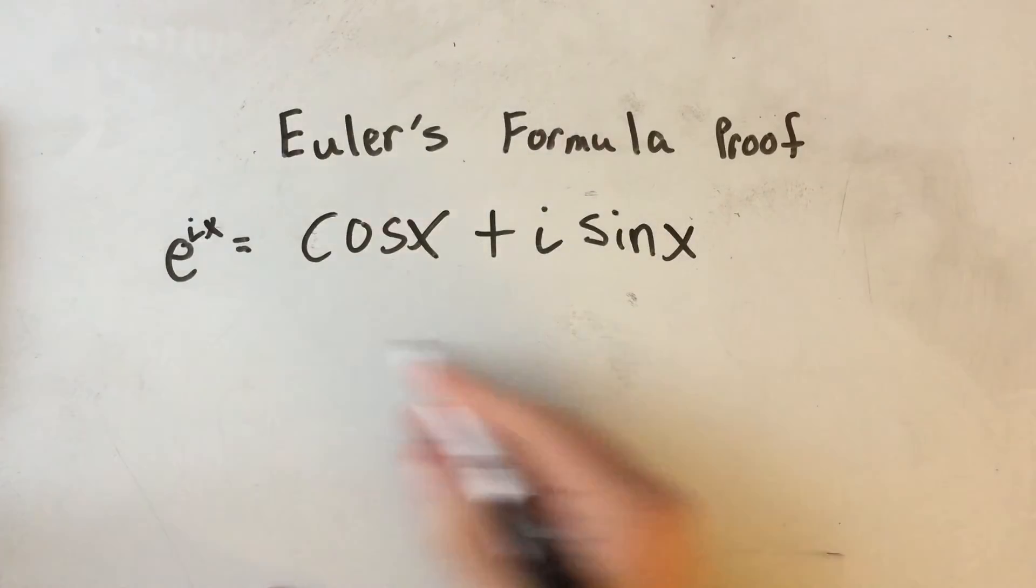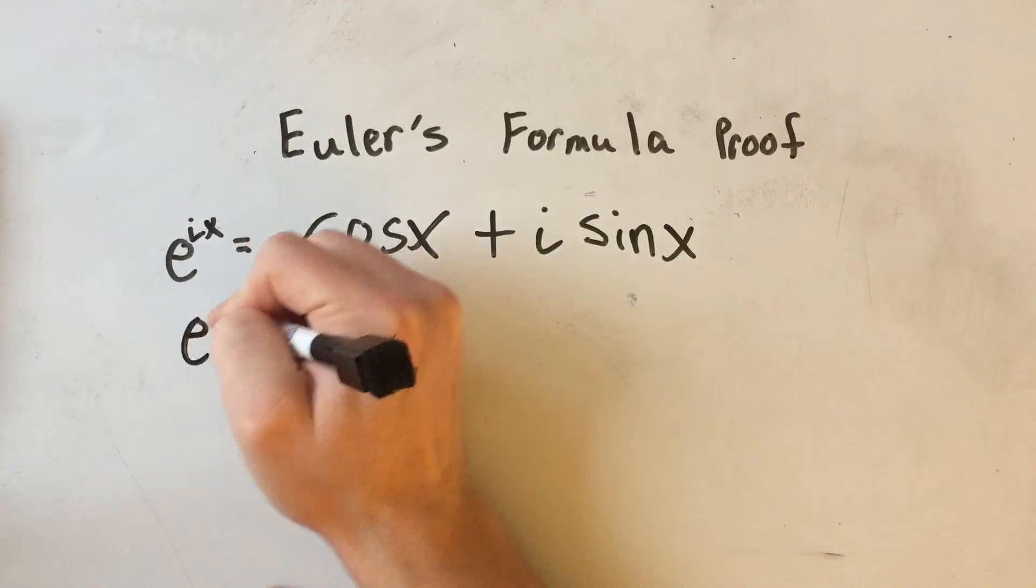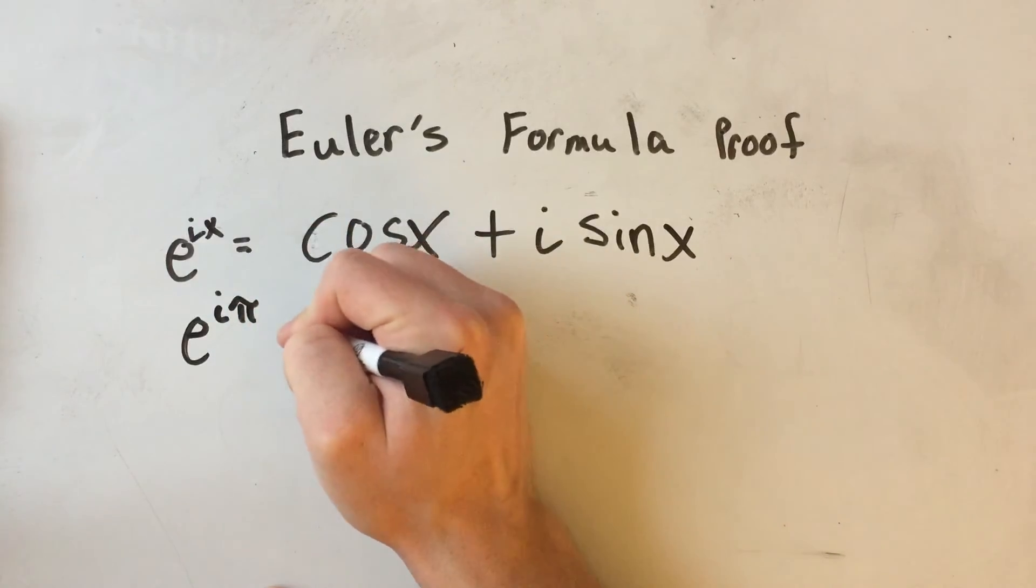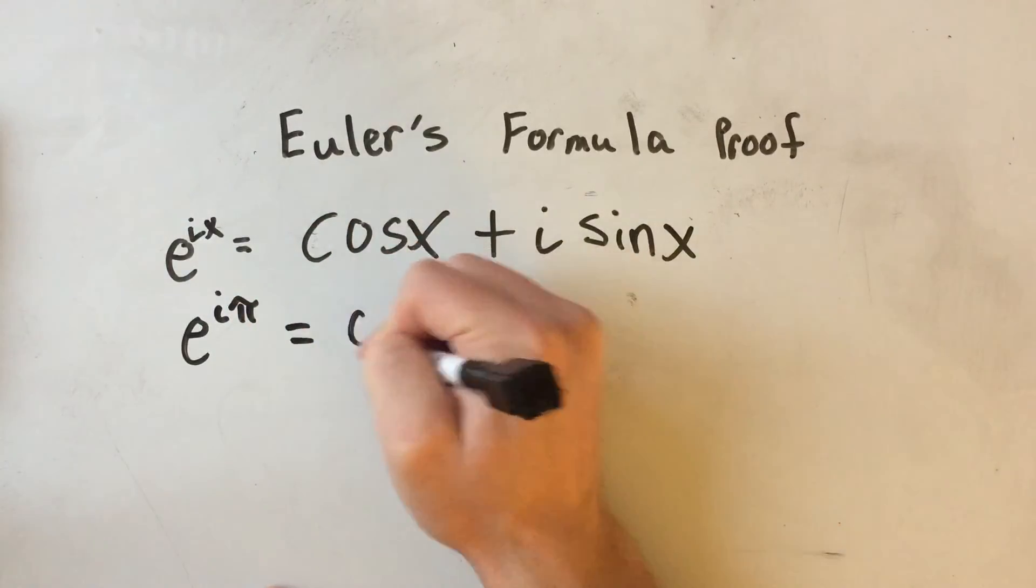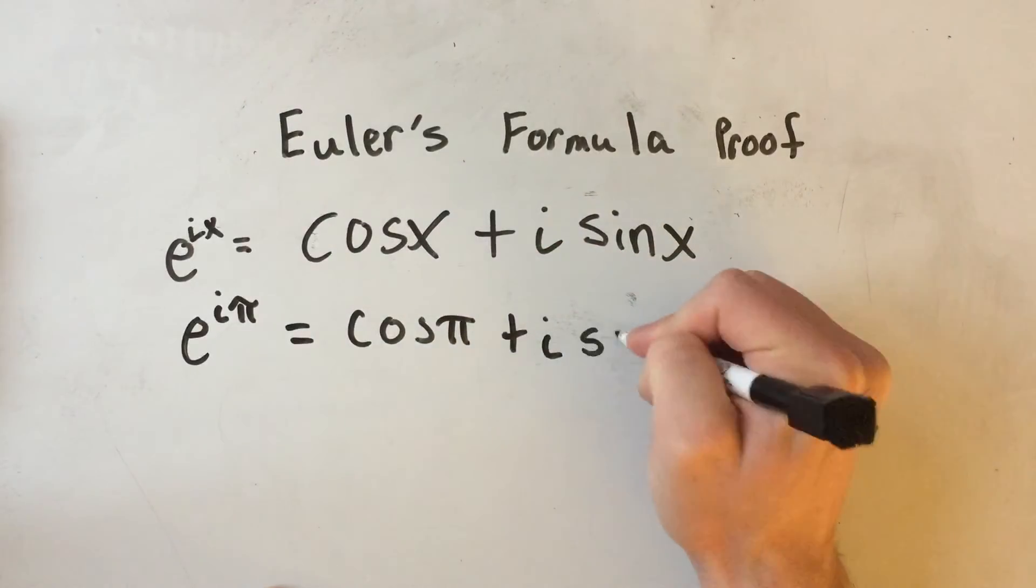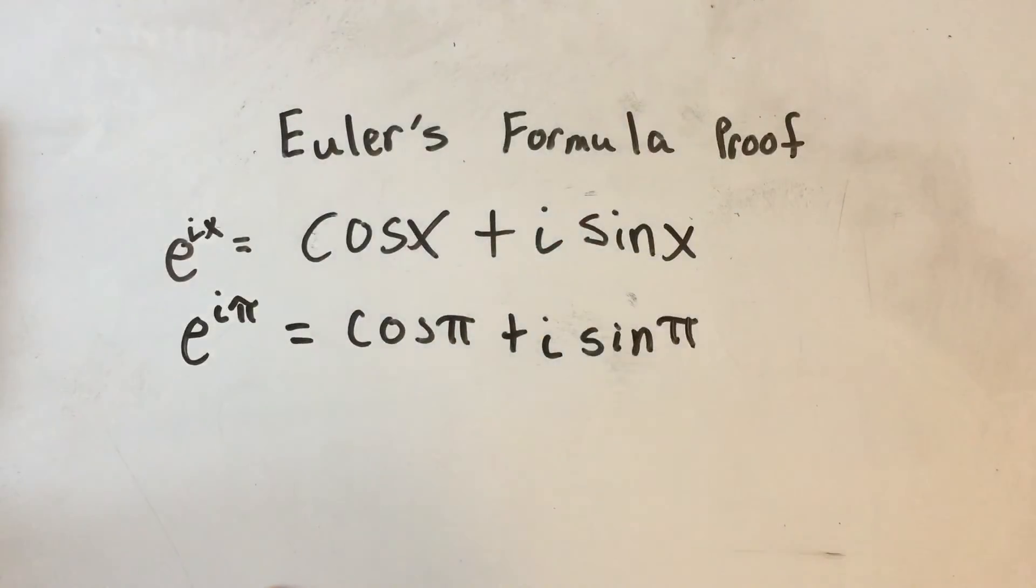And then just for fun, I'll plug in pi for x. E to the i pi. Really famous. That would be cosine of pi plus i sine of pi. Well, sine of pi is zero, and cosine of pi is negative one.